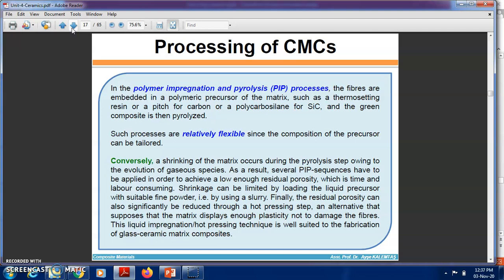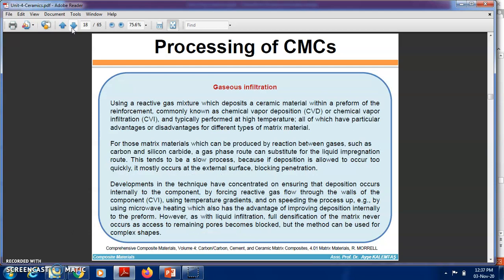Such processes are relatively flexible since composition of the precursors can be tailored. In the gaseous infiltration process, a reactive gas mixture deposits a ceramic material within a preform of reinforcement, commonly known as chemical vapor deposition or chemical vapor infiltration, typically performed at high temperature. For matrix materials which can be produced by reaction between gases, such as carbon and silicon carbide, a gas-phase route can be substituted for the liquid impregnation route.